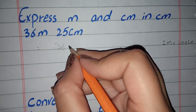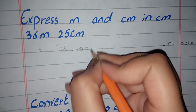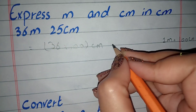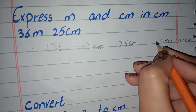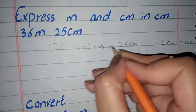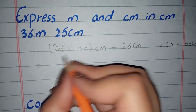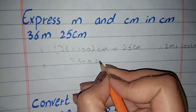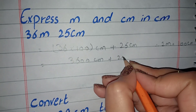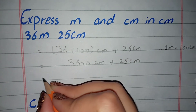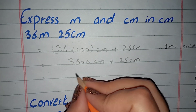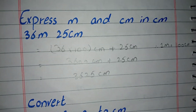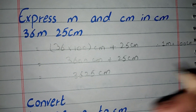We will multiply by 100 and write it in cm. It is already in cm, so we write 25 cm, and here we have a plus sign. So we have 36 multiplied by 100, plus 25 cm. We add them together and we have converted the measurement to centimeters — the answer is 3625 cm.